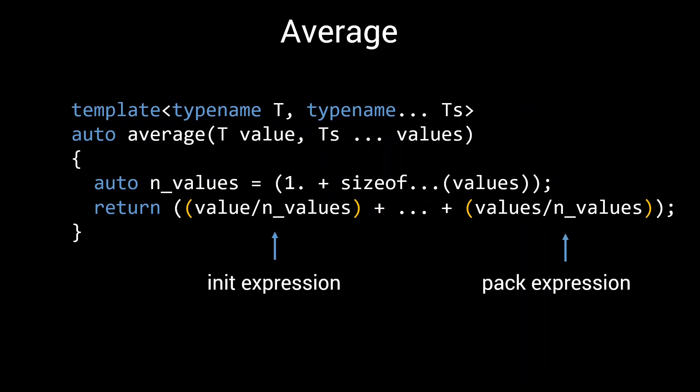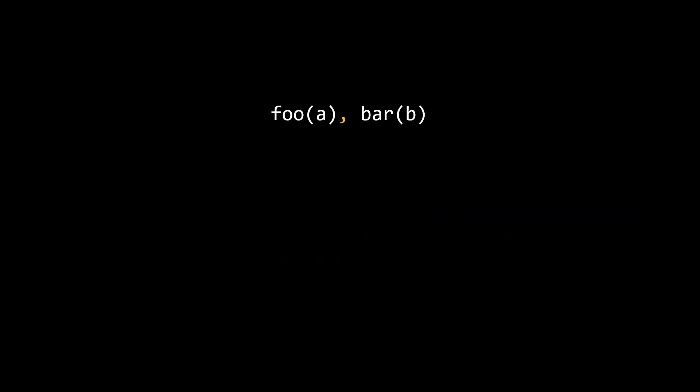Next to arithmetic operators, another very useful operator to fold over is the comma operator. In C++, the comma operator can be used to execute the expression on the left of the operator, followed by the expression on the right. The expression foo(a) is executed first, followed by the expression bar(b).